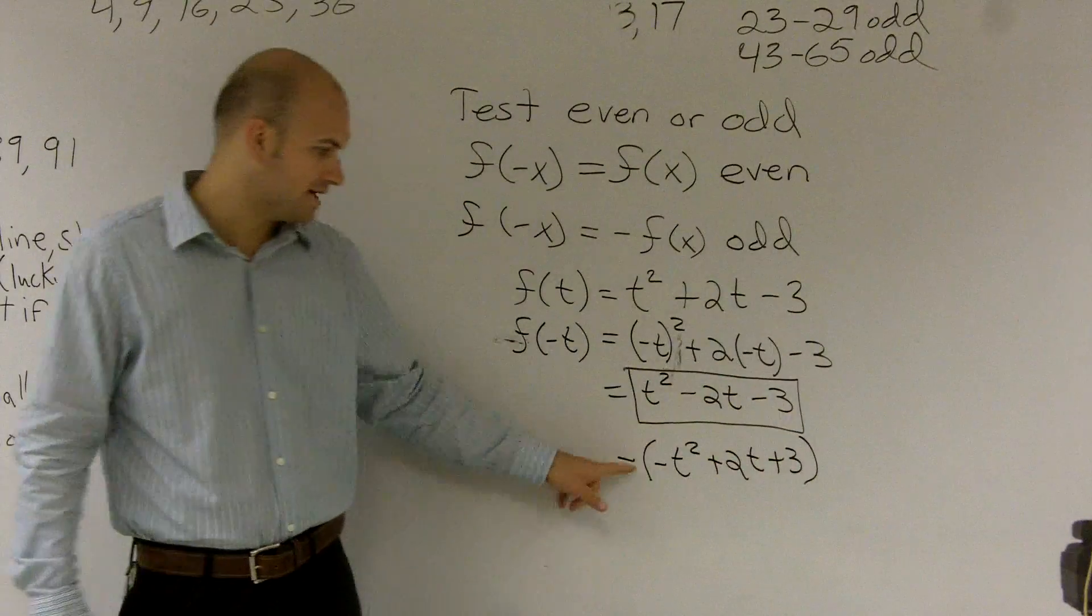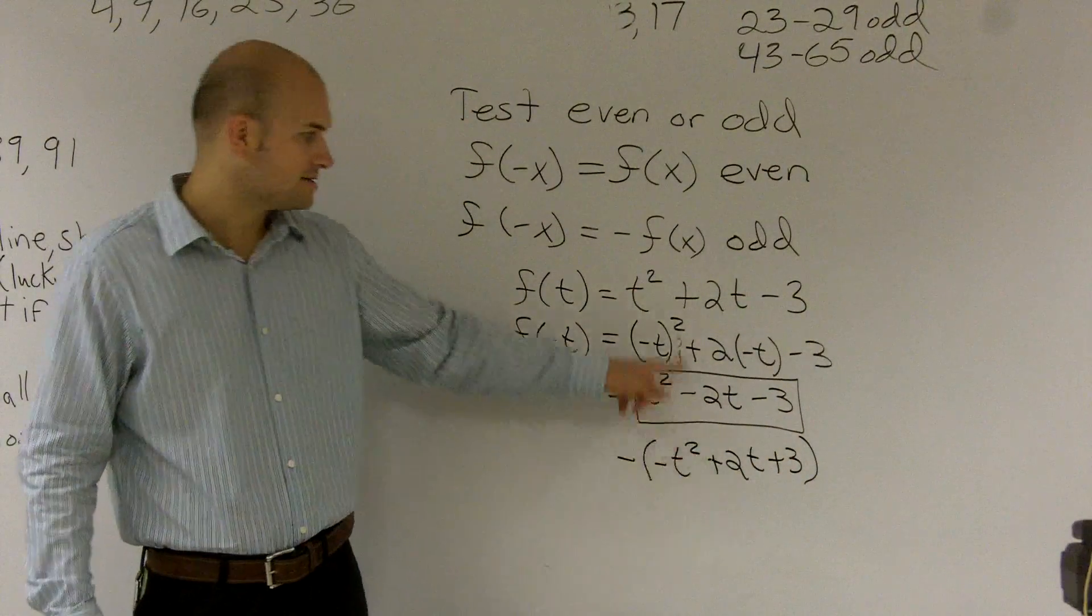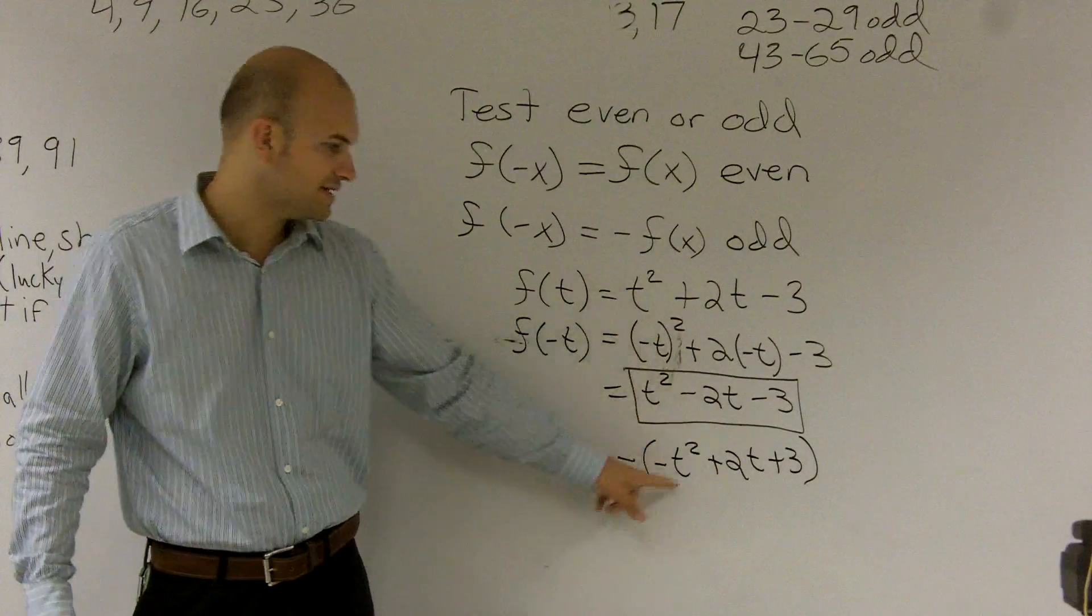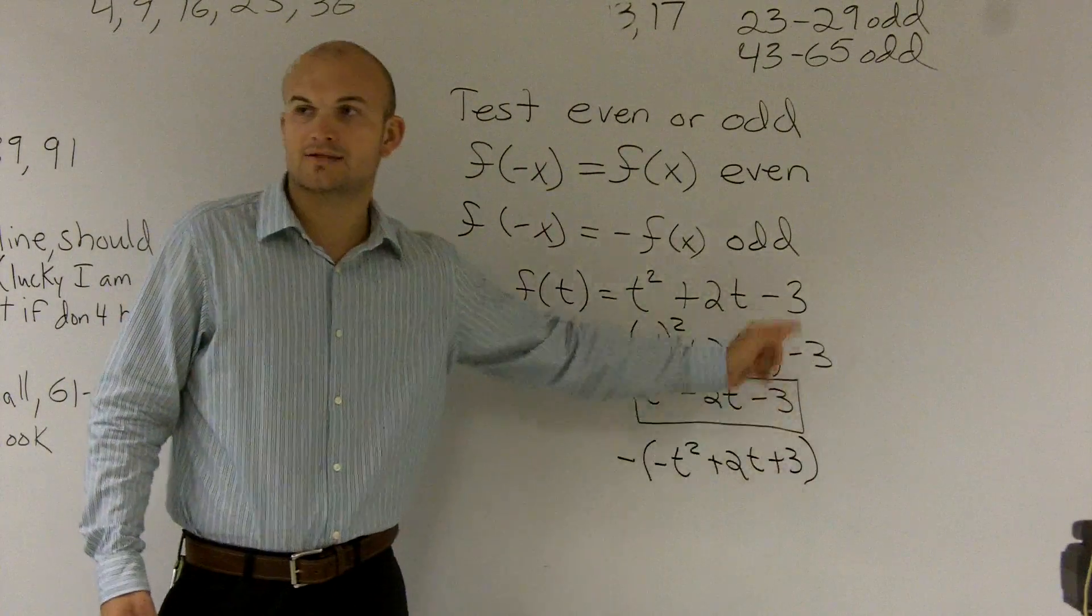So when you factor out that negative 1, do I have f of x, or your original function? And no, we don't, because now it's a negative 2t, and now it's a plus or a minus 2. Does that make sense?